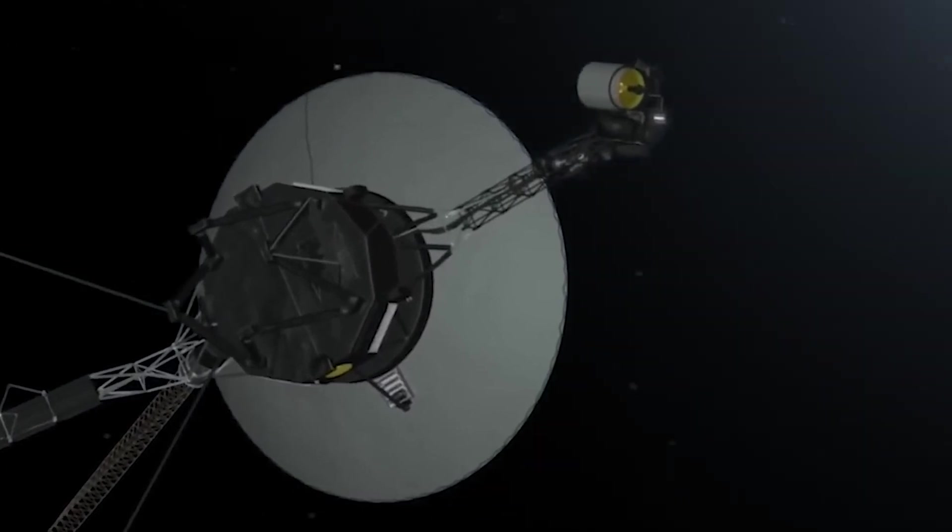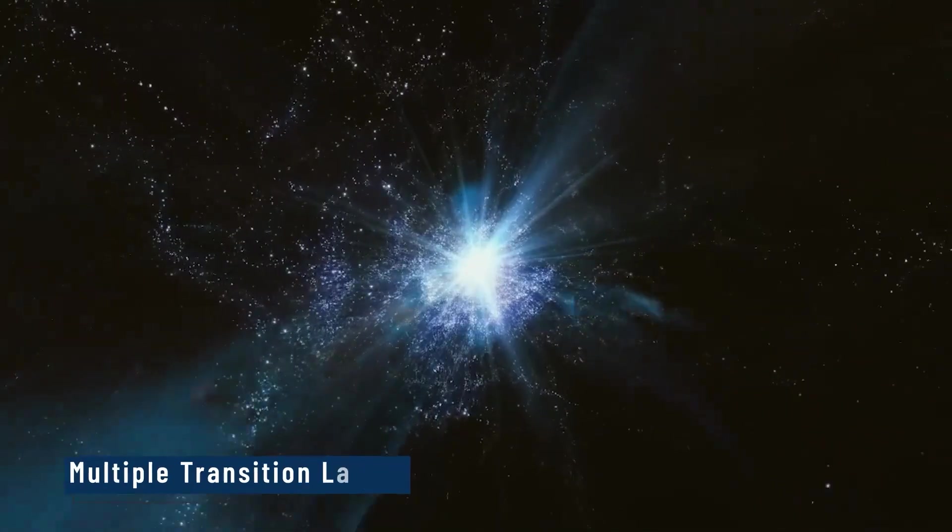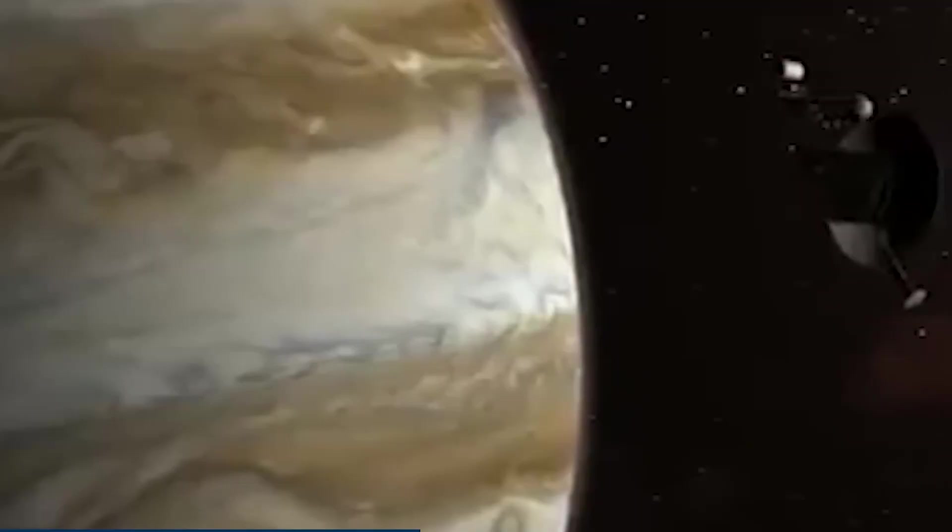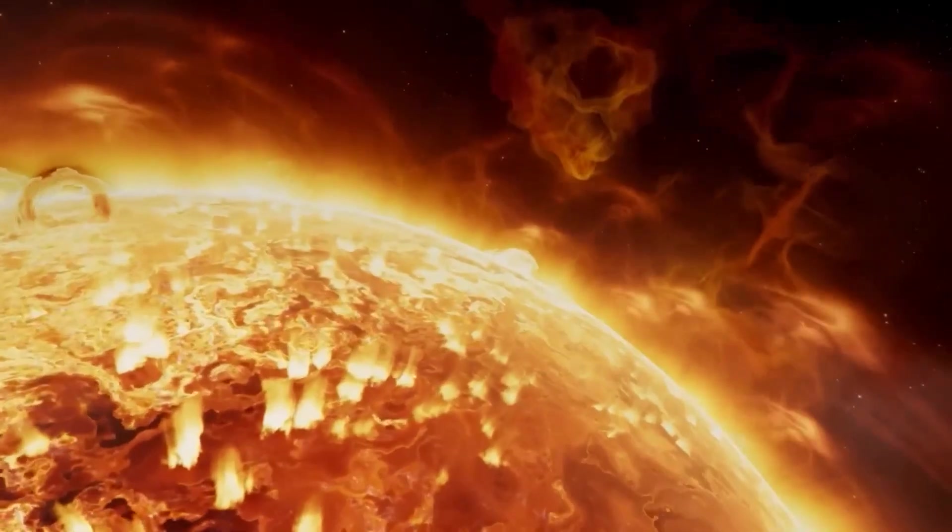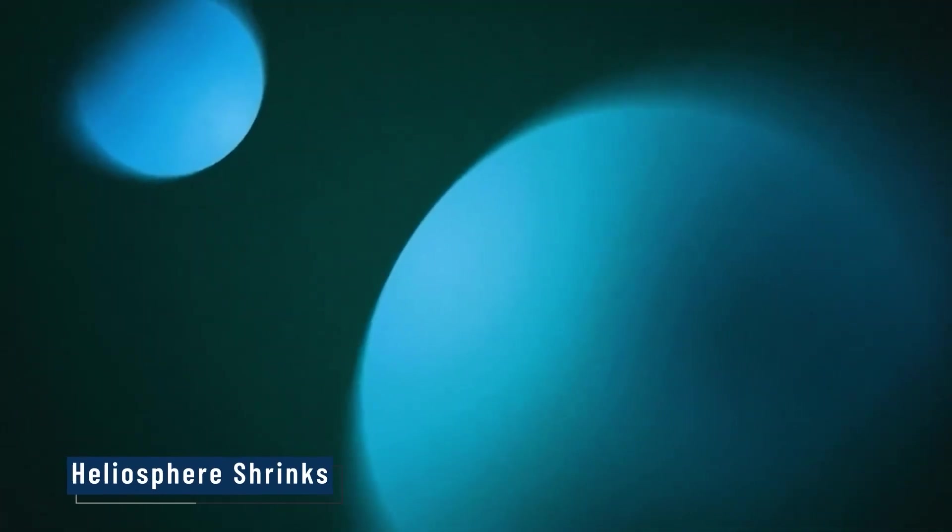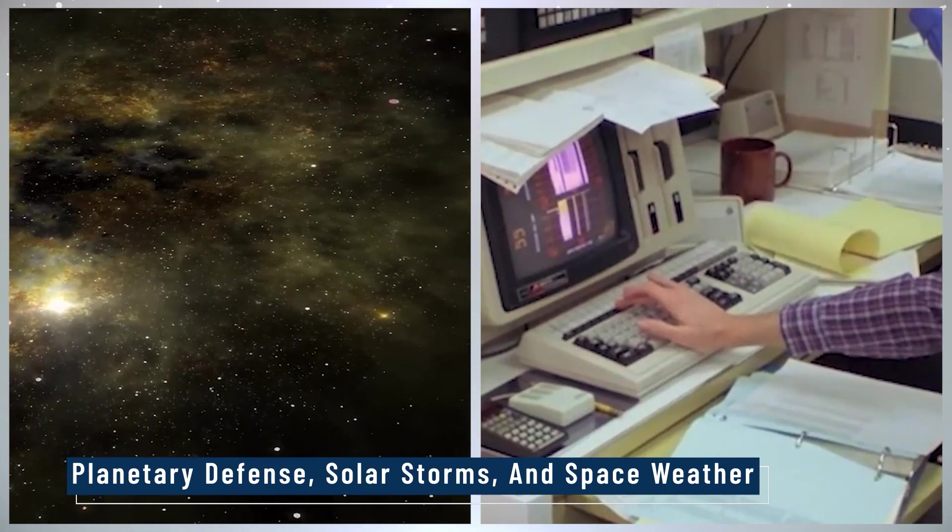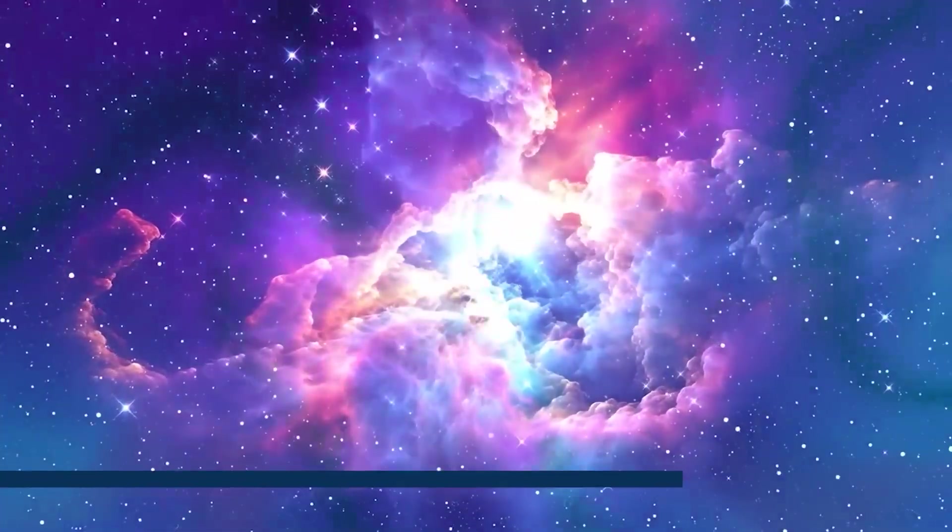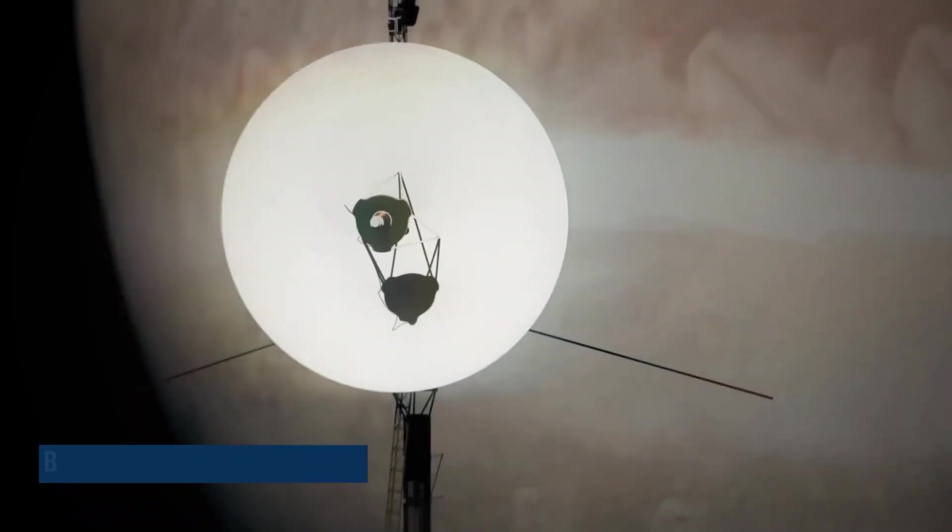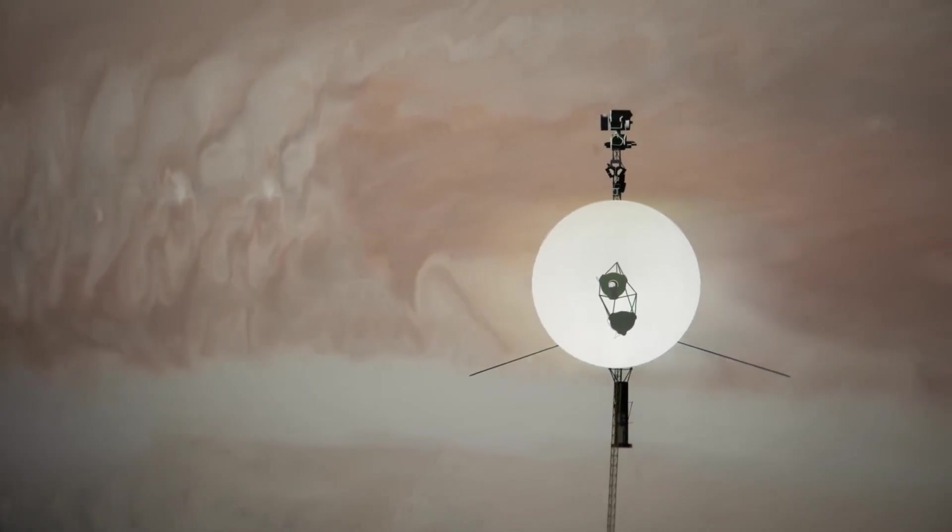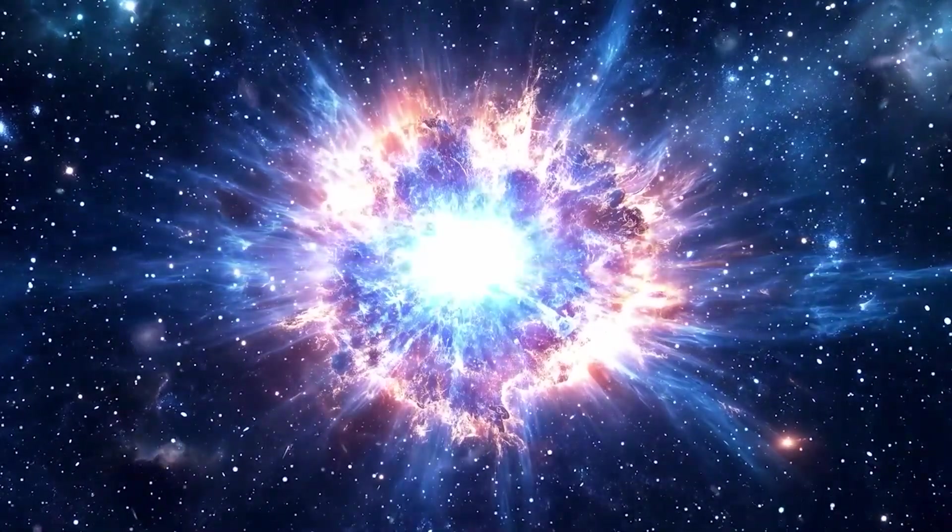Voyager's sensors showed the heliopause behaves like a breathing membrane. Sometimes the solar wind pushes out, sometimes interstellar pressure pushes in. The boundary moves, it fluctuates with solar activity, creating regions of turbulence and instability. It's more like foam than a wall, one scientist said. And that's a huge surprise. What's more disturbing is that Voyager passed through multiple transition layers. Instead of a single crossing, it danced through a no-man's land of shifting pressure and particle density. That suggests Earth's protection from galactic radiation isn't as solid as we thought.